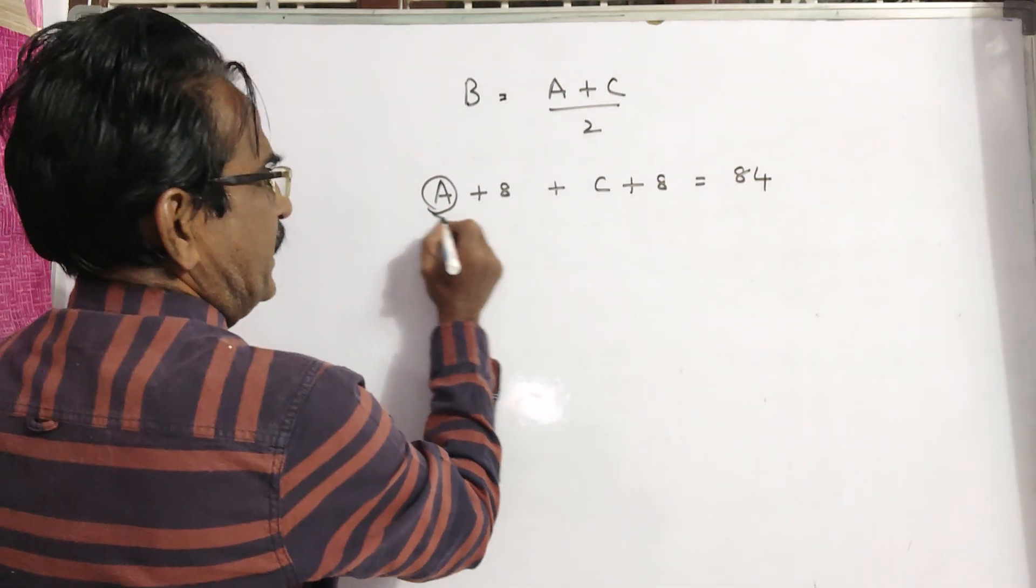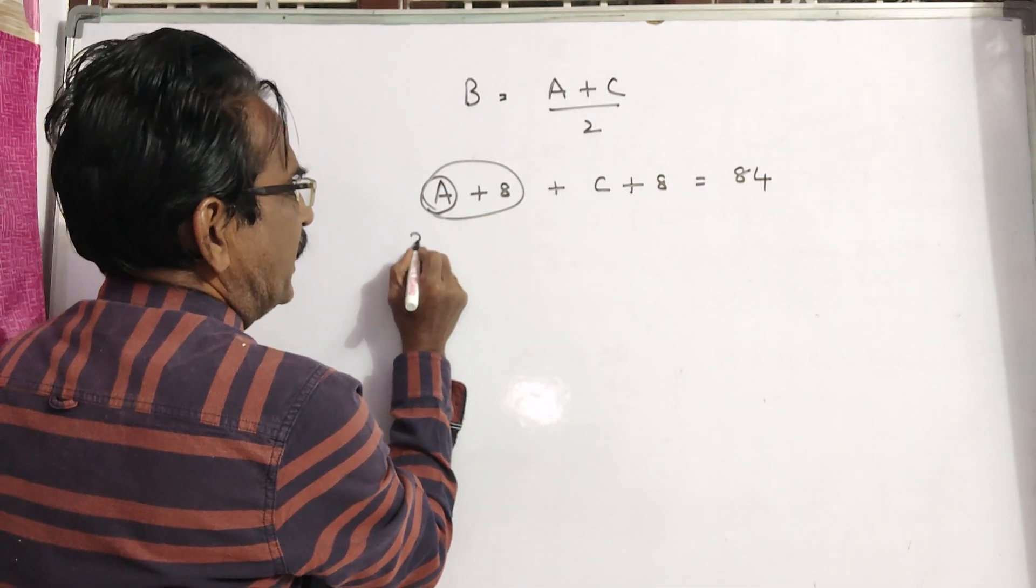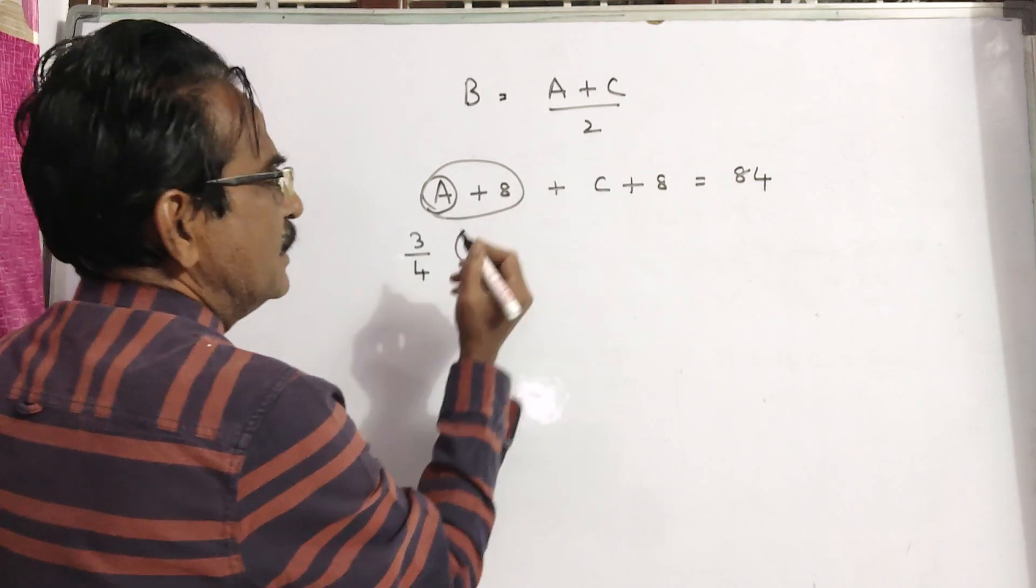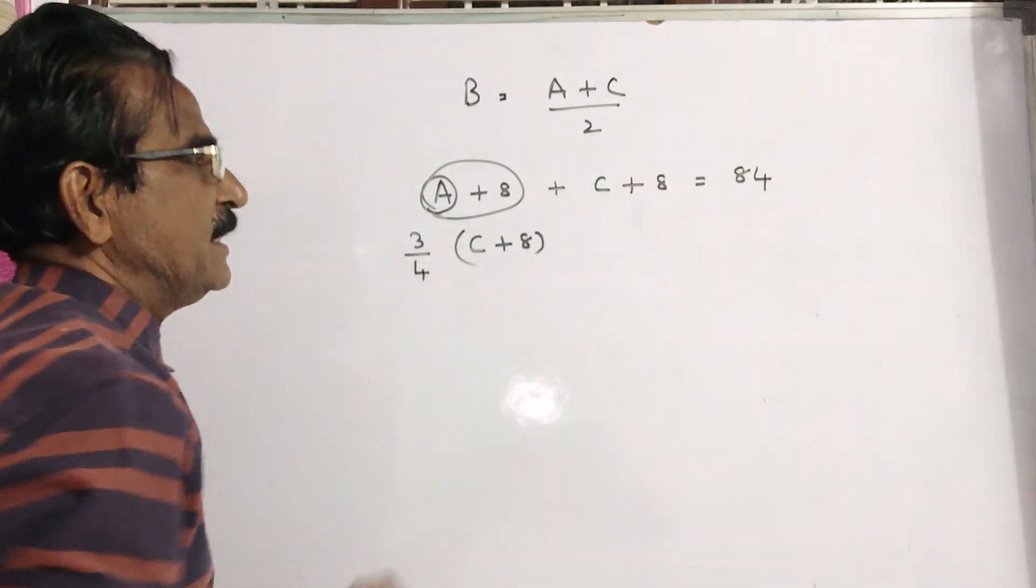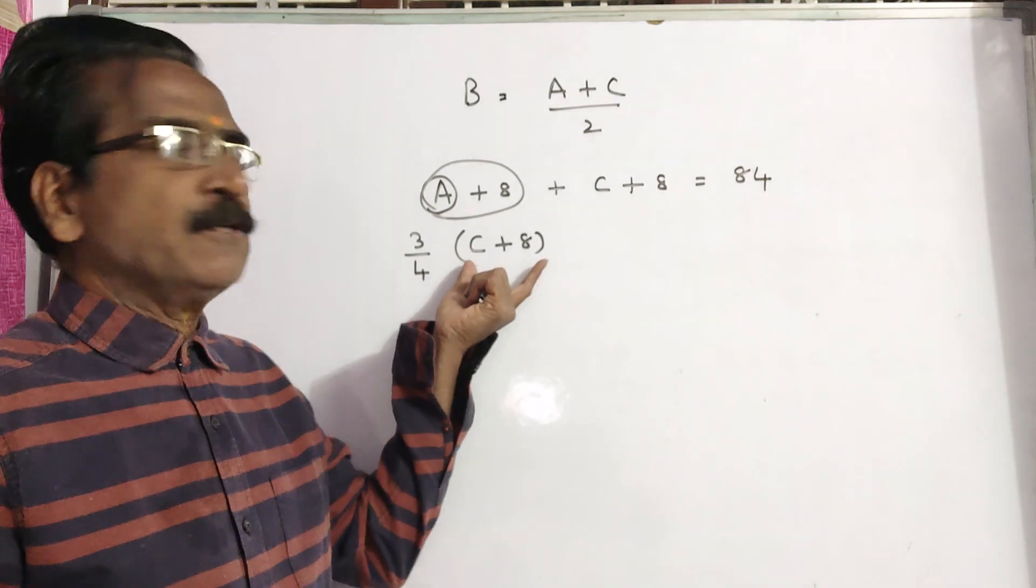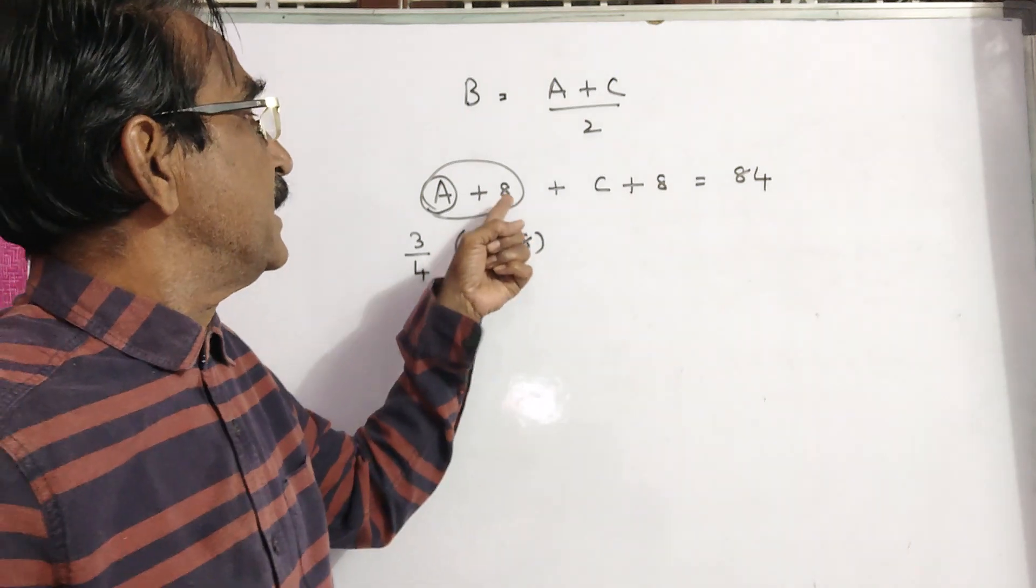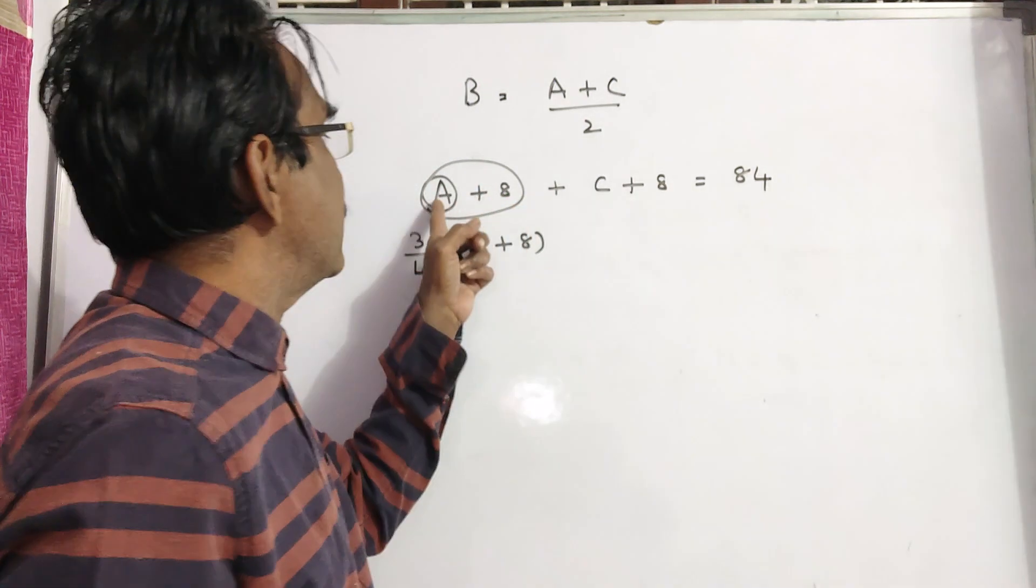So A's age after 8 years will be 75%, that is 3 by 4 of C's age. C's age, how much will be C plus 8? So you can write 3 by 4 into C plus 8.